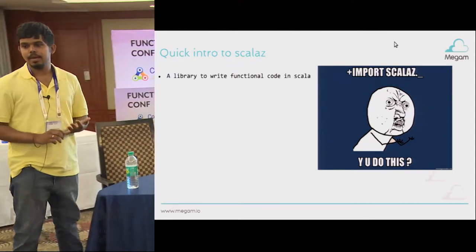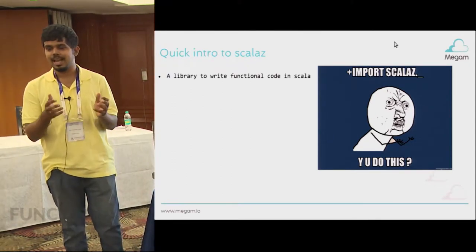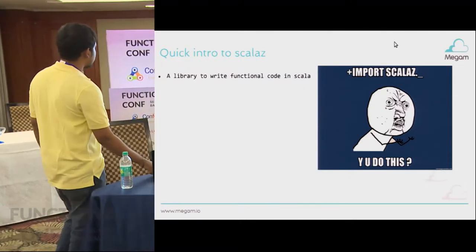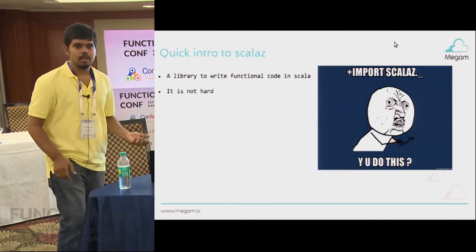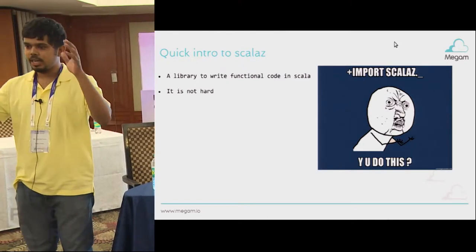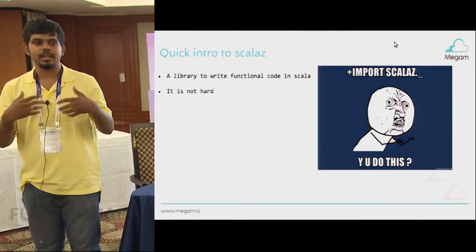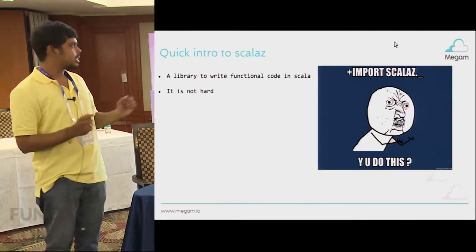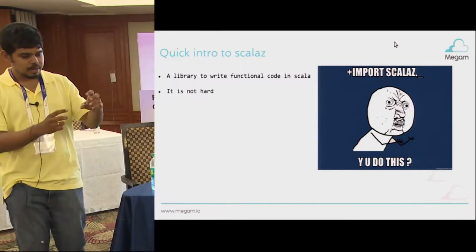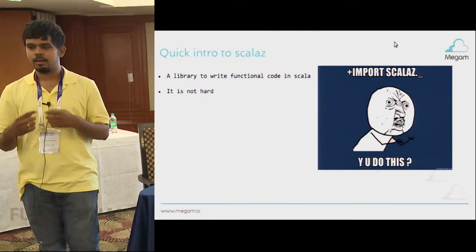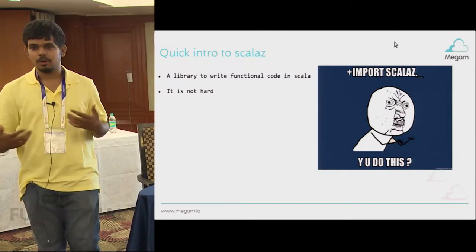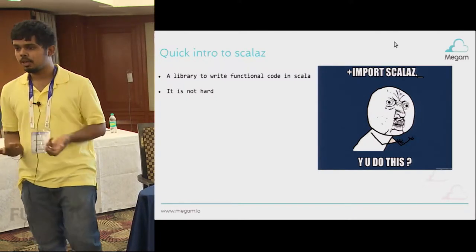ScalaZ is a library to write functional code — it's actually an extension from the core library. And it's not hard. If you get into monads and all that stuff, a lot of people keep saying it is, but how I see it is just look at the library, see how you can use this type class in the code, and try to solve a particular problem. It's an iterative process — maybe tomorrow I would probably learn how it actually works entirely.